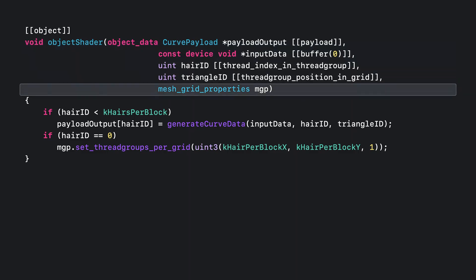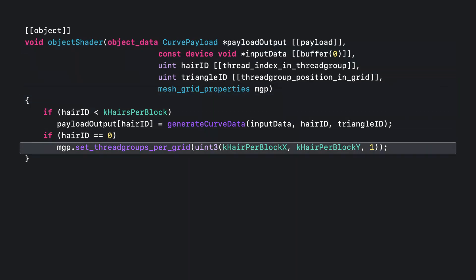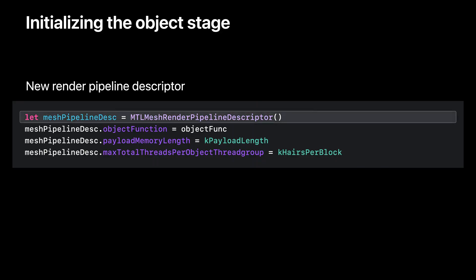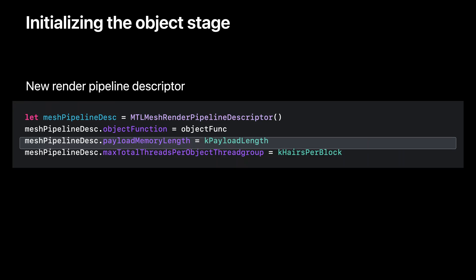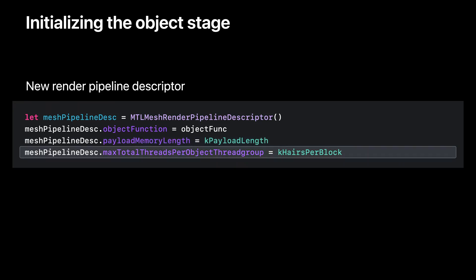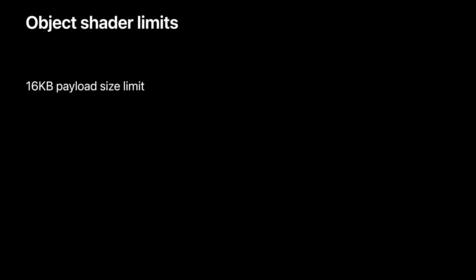For pipeline initialization, first allocate the mesh render pipeline descriptor. Then initialize the object function and specify the desired payload length, along with the maximum number of threads per thread group. There are certain constraints on object shaders: payload format and contents are fully customizable, however payload size can't exceed the limit of 16 kilobytes. Also, the maximum number of mesh thread groups that each object thread group produces can't exceed 1024.